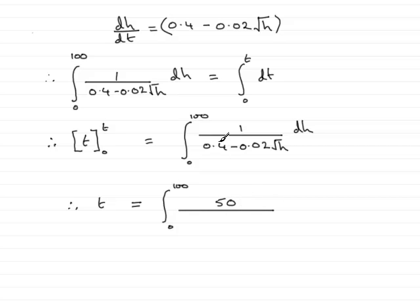And then 50 times 0.4 is going to give me 20. And 50 times 0.02 root h will give me just simply root h. You can try it on a calculator if you like, but that's what you'll get. And that is what we had to prove.